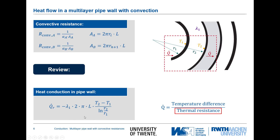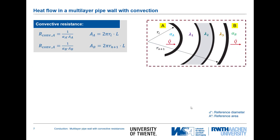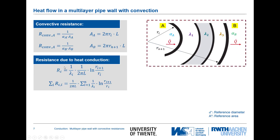Looking at this equation, we can reformulate thermal conductivities as thermal resistances. The thermal resistance for conduction is 1 over the thermal conductivity, times 1 over the surface area 2πL, times the logarithm ln(R_(i+1) / R_i), where these are the inner and outer radii of each layer. For multiple layers, we sum the resistances of the individual layers.